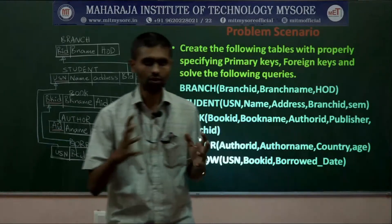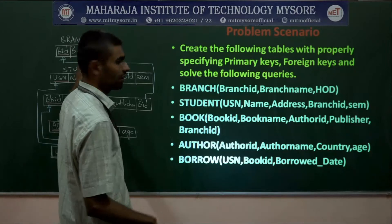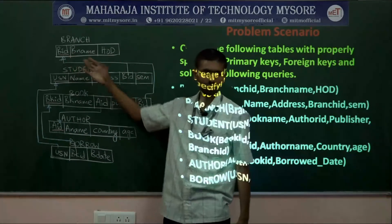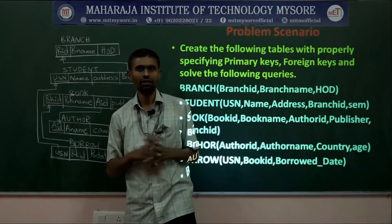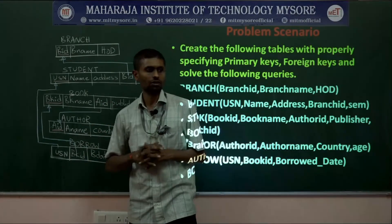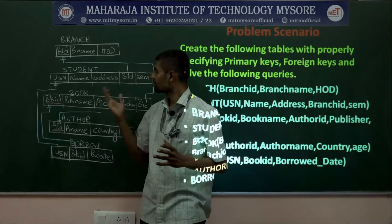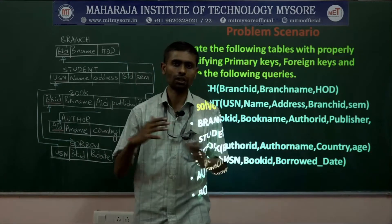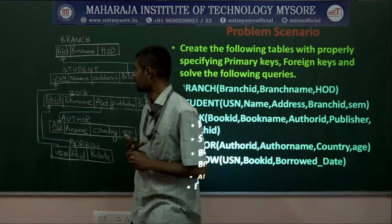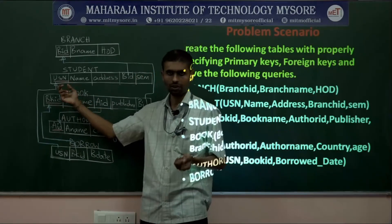Let's recall the story behind all these tables. We have a list of branches recorded in a branch table, where each branch is identified based on branch ID as a unique key attribute, having a name, HOD, and so on. A student belongs to only one branch, but a branch may contain many students. Each student is uniquely identified based on USN, which is the key attribute.